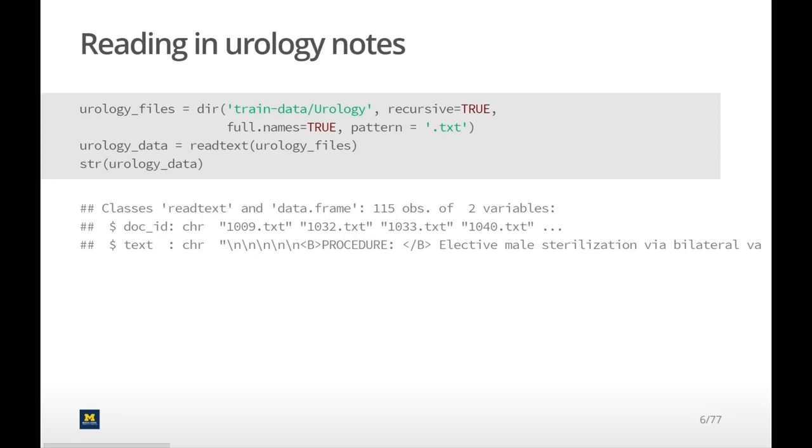Next, I use the readtext function and give it this vector of file names from urology_files, and store that to urology_data. Urology_data is basically a data frame where there are two columns. The first column is doc_id, which contains the names of the files. In the second column, it's called text, it contains the actual text of that document.